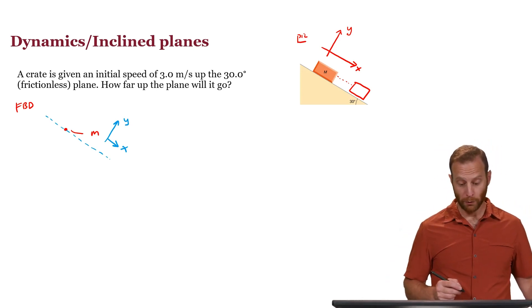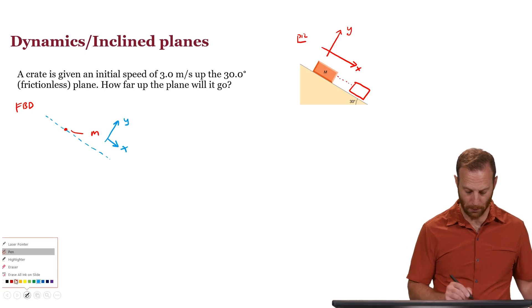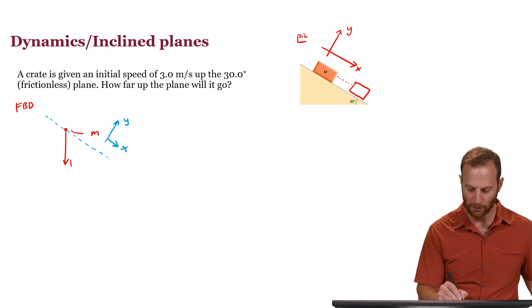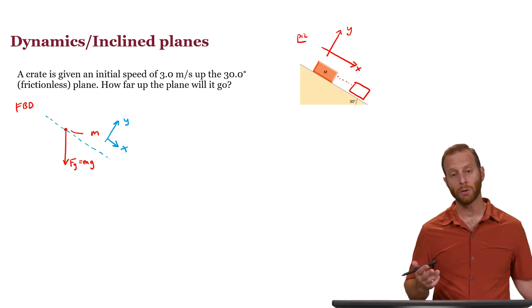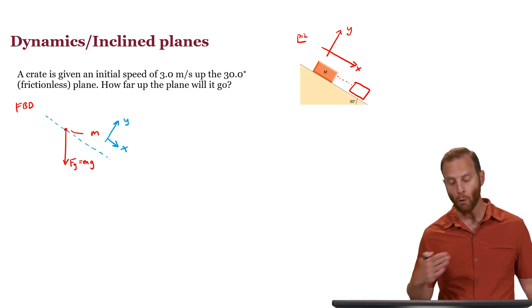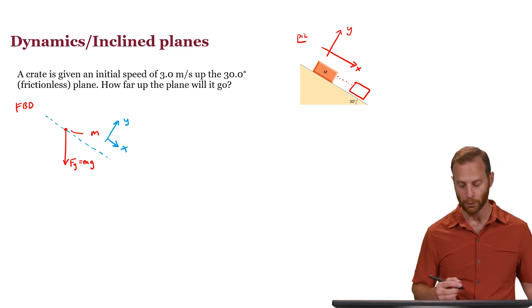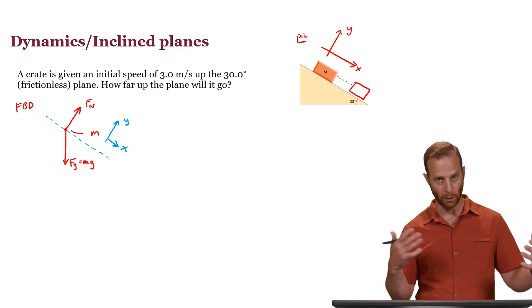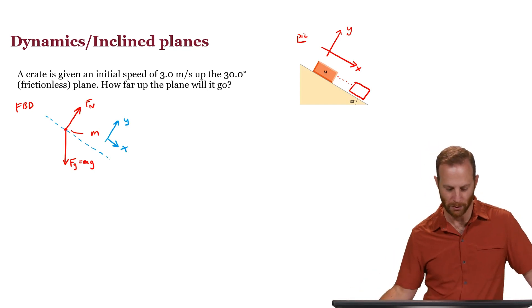I know that the force of gravity points straight down, looking something like this. That's F_G, or mass times G. I also know that the surface, the plane, provides a force that stops the block from falling into it. Now there's no friction. So there's no force that is parallel to the surface, but there is a force that is perpendicular to it. That is what we call the normal force.